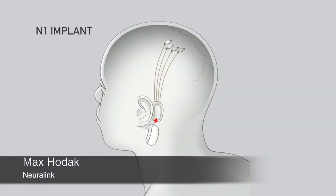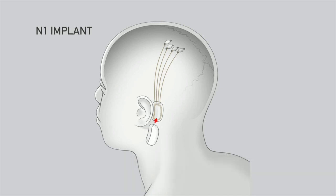So the N1 implant we can place, as Elon mentioned, many of these, possibly up to ten. In one hemisphere for our first patients we're looking at four sensors: three in motor areas and one in a somatosensory area, which are connected via very small wires tunneled under the scalp to an inductive coil behind the ear.